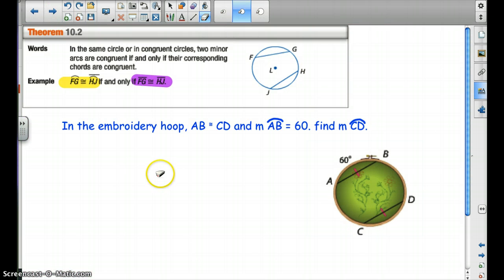So let's start with this first theorem, 10.2. What it's saying is that the two arcs are congruent if and only if the two chords, corresponding chords, are congruent. So as long as those chords are corresponding, then we can say those two arcs are congruent to each other as well. Take a moment to pause the video and write that down.